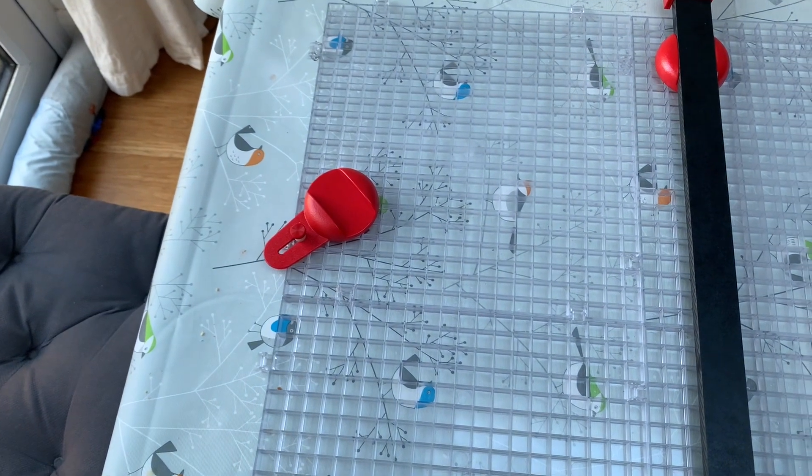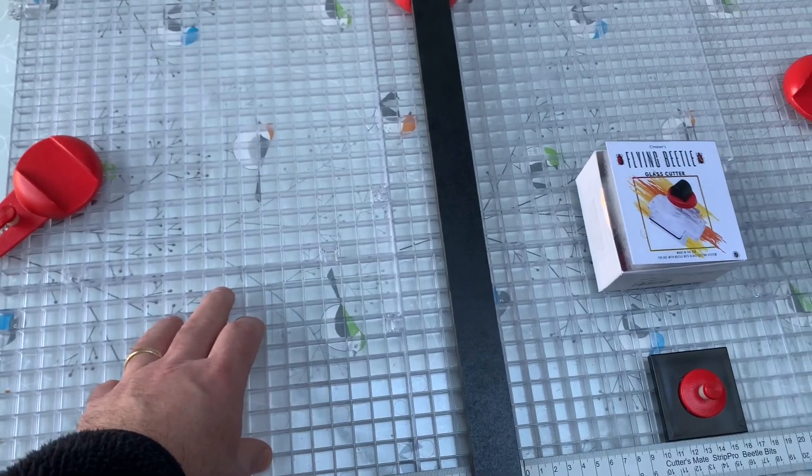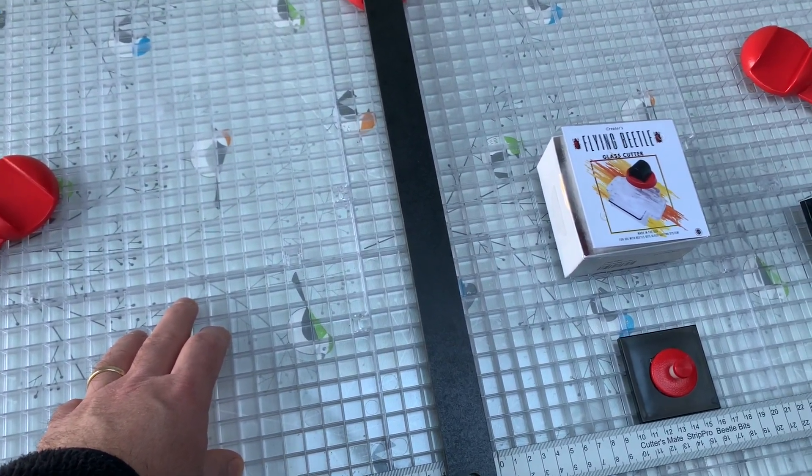If you're setting it up from fresh, you might want to just nudge that to the end so it won't overhang there. When you've got a bigger sheet that you're working on, it's better to have them further out.